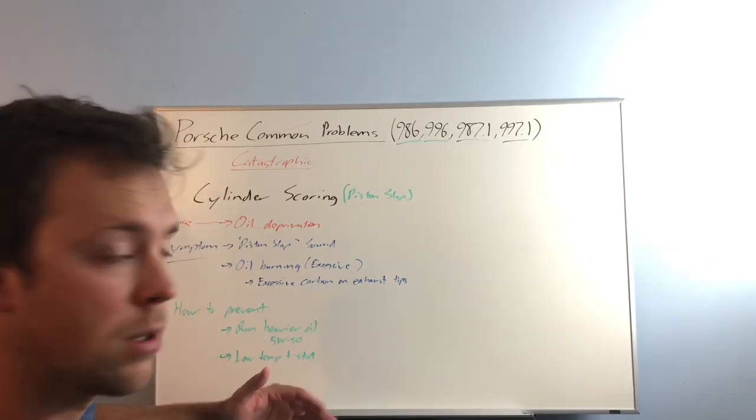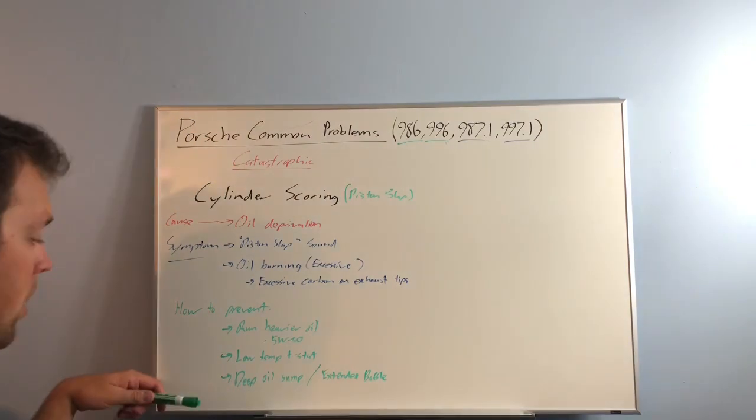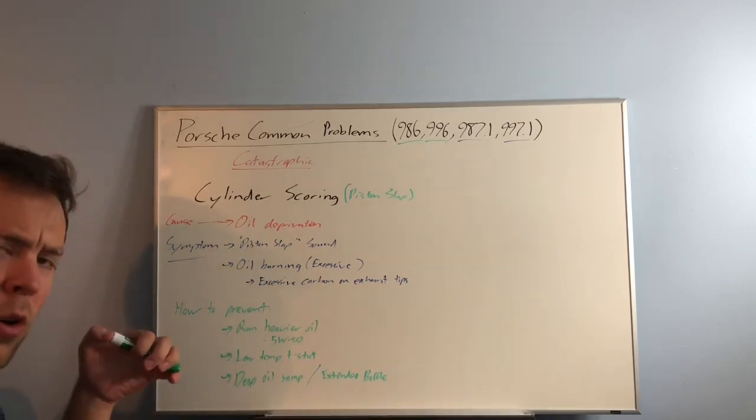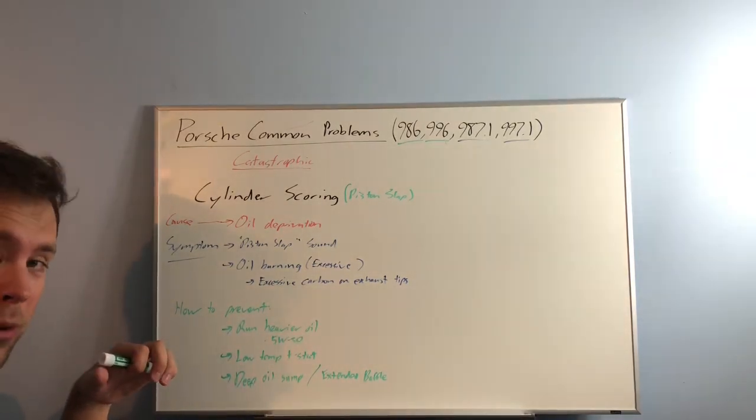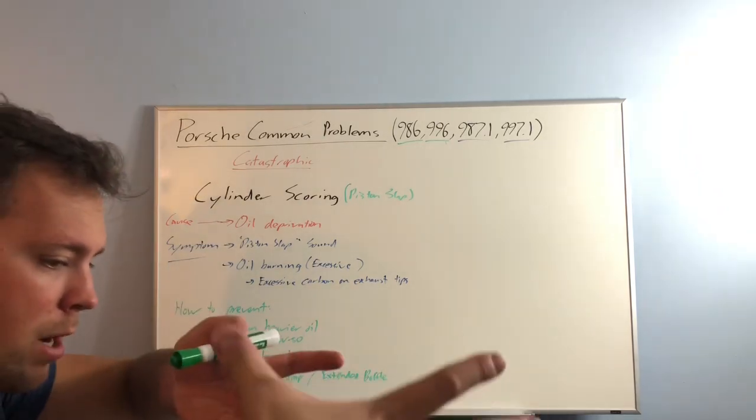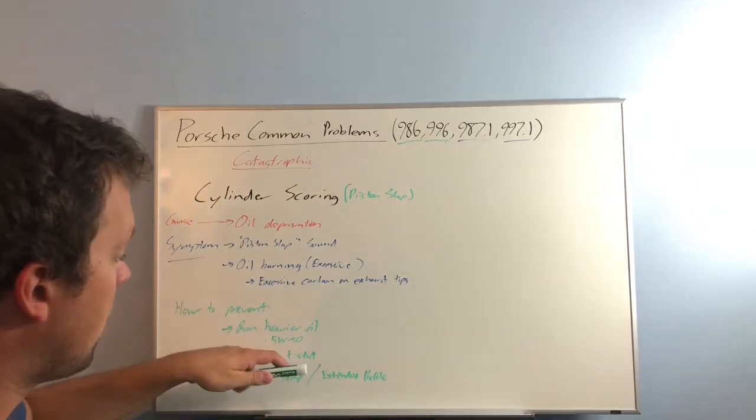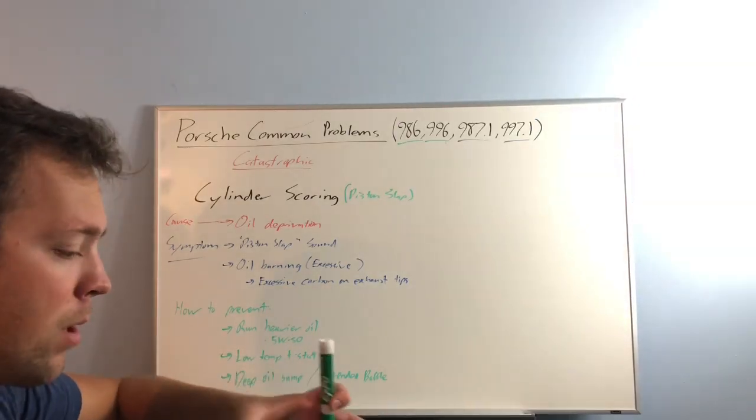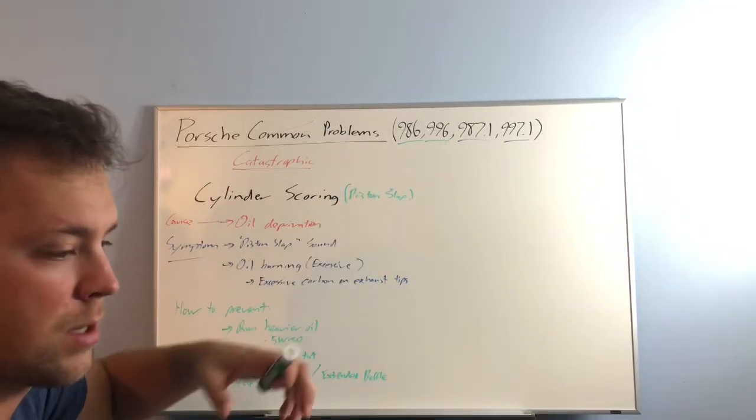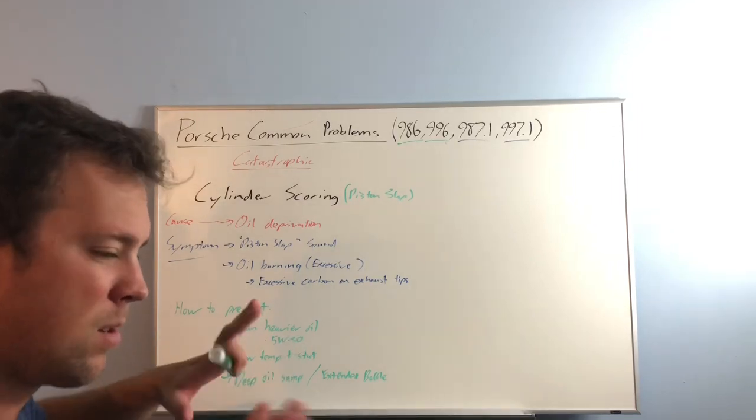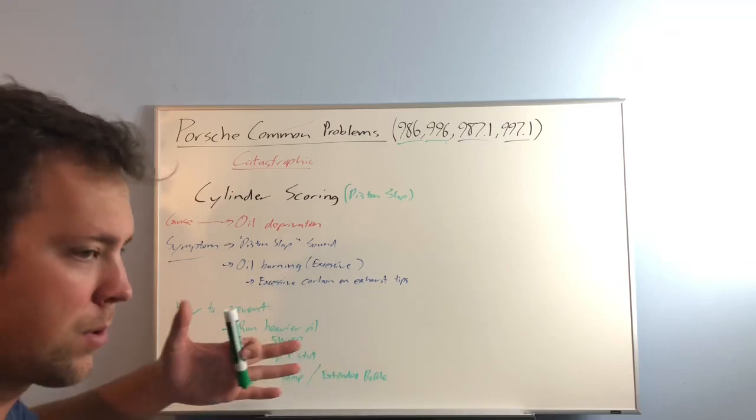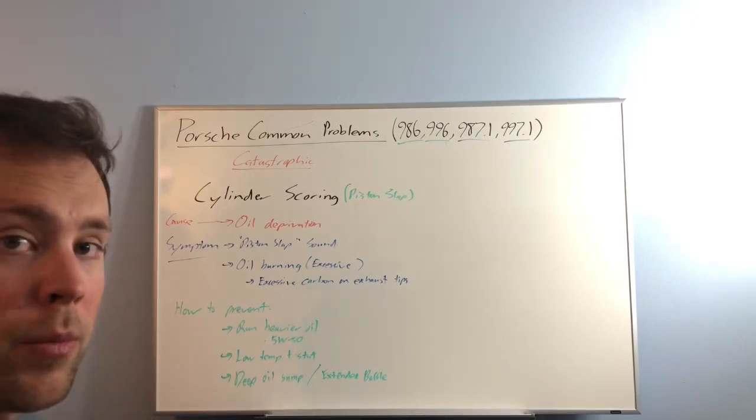Deep oil sump and extended baffle. Basically, you can get a kit that adds another, I think it's about another quart to your already eight quart oil system. And it also adds an extended pickup. So you have that much oil that has to slosh before your pickup can be deprived of oil. Also, there's aftermarket baffles, different style baffles that go around your pickup. I don't know if you have one already on each of these engines, but there's maybe debatably better designs. So pretty much those are supposed to more effectively prevent sloshing away from your oil pickup.